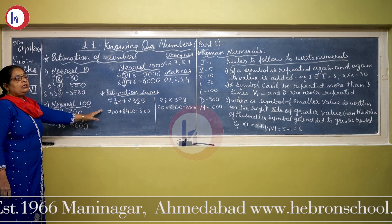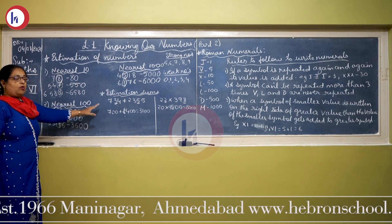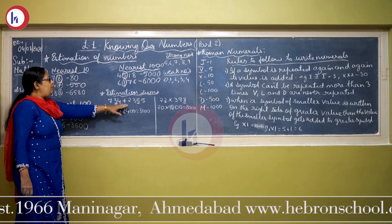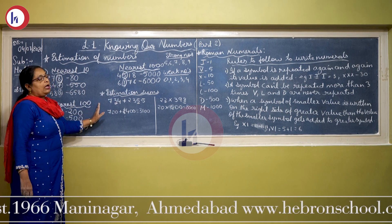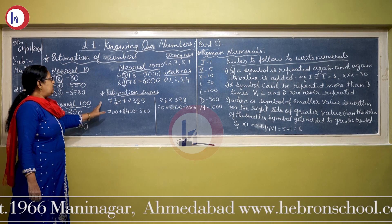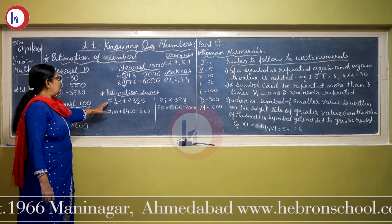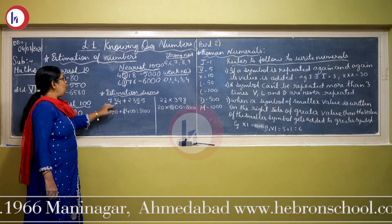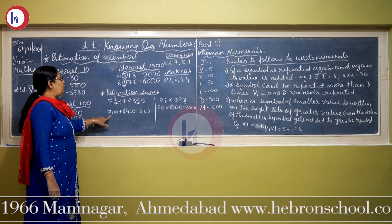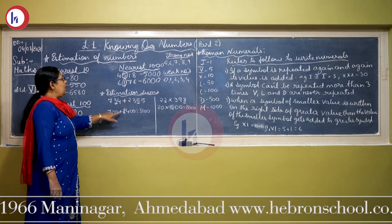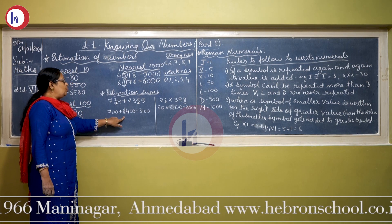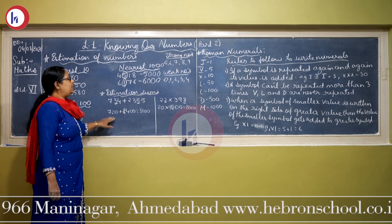This way addition can be carried forward according to the place values, and according to that you will do the estimation. So the estimated value of 7334 is 700, plus 2355 estimated as 2400.